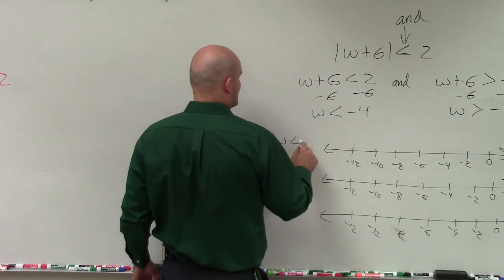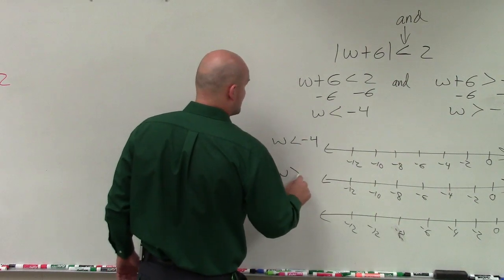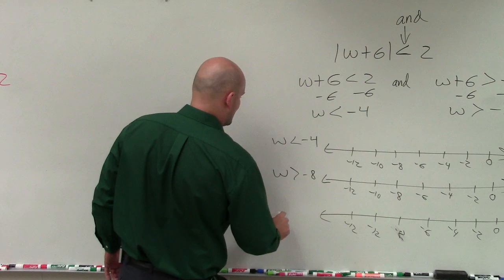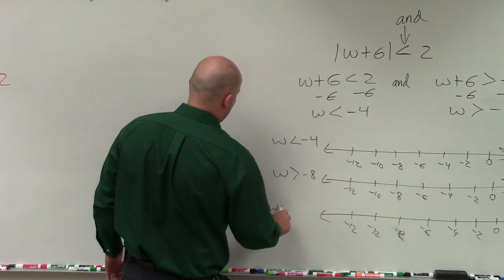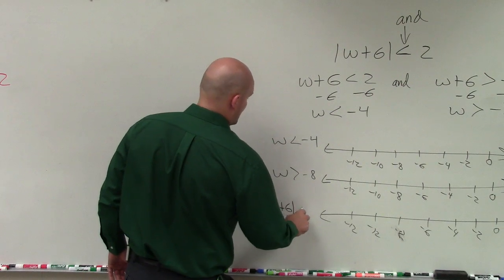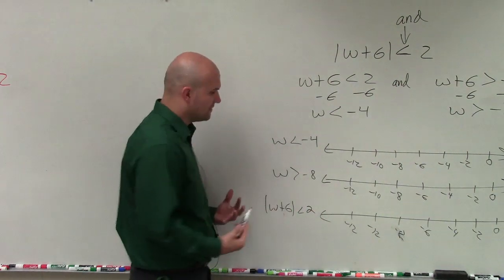So here, I'll graph w is less than negative 4. Here, I'll graph w is greater than negative 8. And here, I'll graph the solution, the and of absolute value of w plus 6 is less than 2. So I'll graph both of them together.